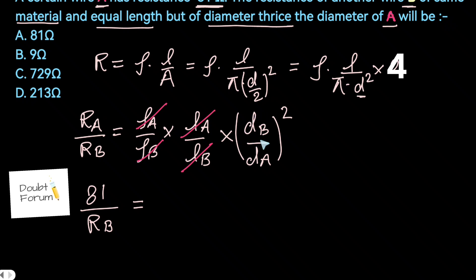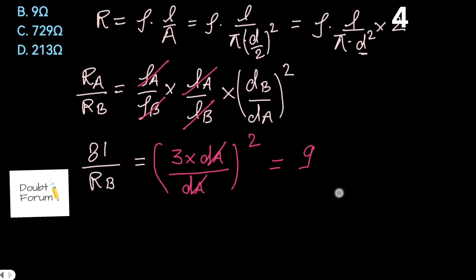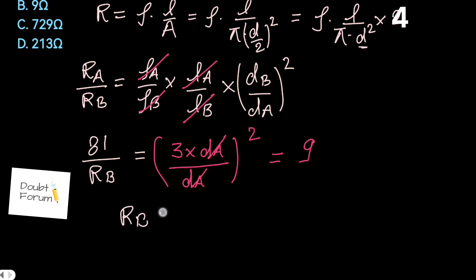Now the diameter of wire B is 3 times the diameter of wire A. So this diameter of wire B can be written as 3 times the diameter of wire A, in denominator the diameter of wire A into whole square. So this d and d would get cancelled and here it comes out to be 3 squared, 9. So value of R_B would be equal to 81 divided by 9, that is 9 ohm.